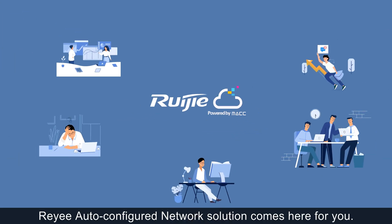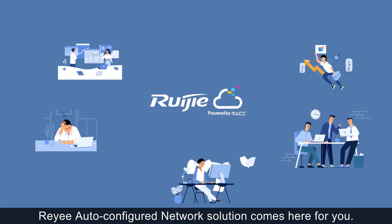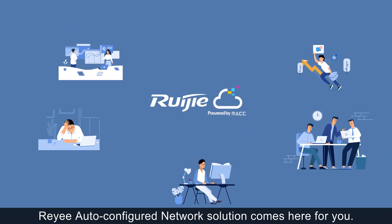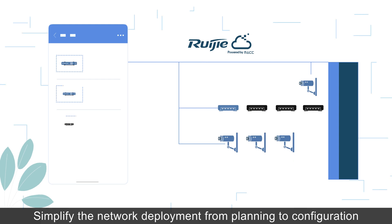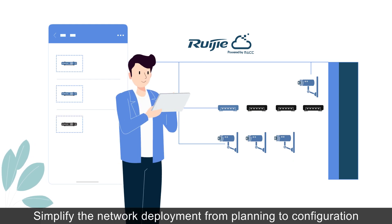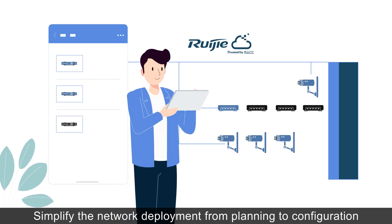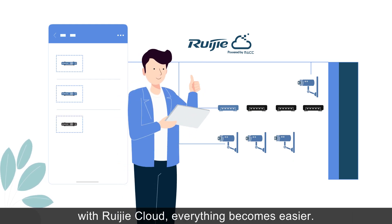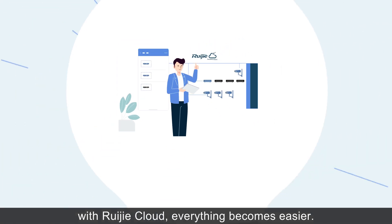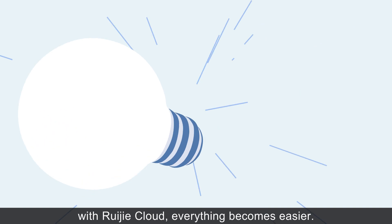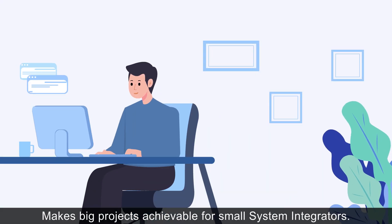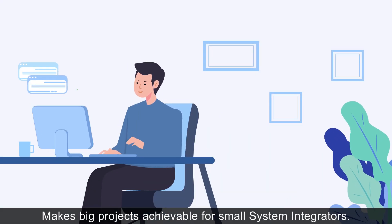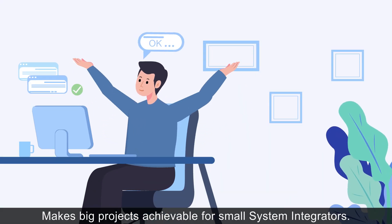RAE Auto-Configured Network Solution comes here for you. Simplify the network deployment from planning to configuration with RAGIA Cloud. Everything becomes easier, making big projects achievable for small system integrators.